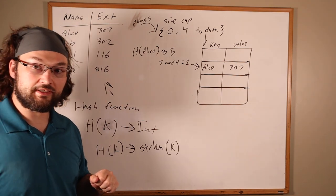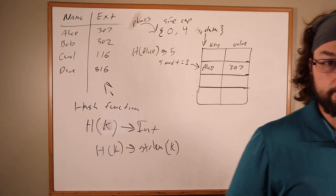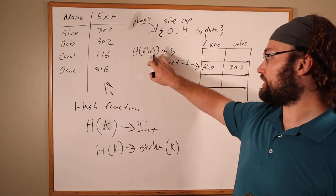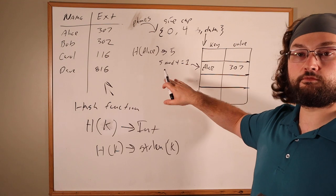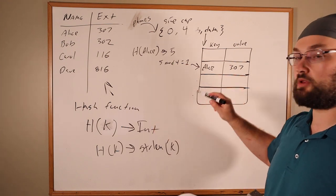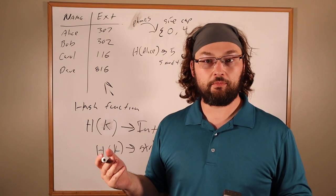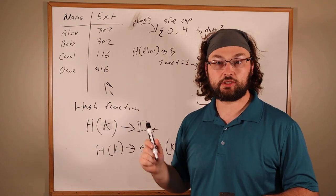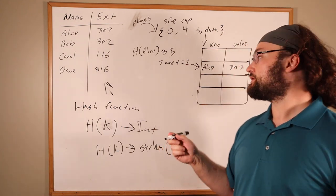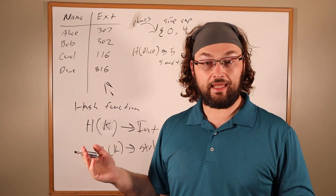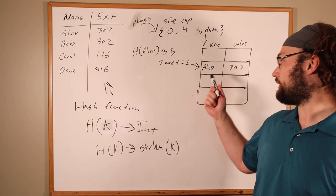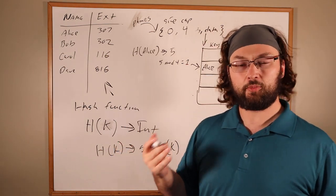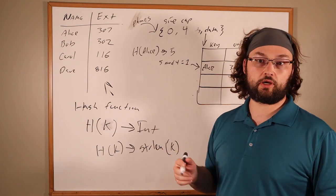Now with just one item in the table, if we want to do a lookup of Alice, we can hash Alice, get 5, 5 mod 4 is 1, we look in slot 1. Now we have to do a comparison because multiple keys could potentially hash to the same value. So we have to ask, is the key in the slot equal to the key we're looking up? In this case we're looking up Alice, so it is, and we can look at the corresponding value. That's the simple lookup operation.